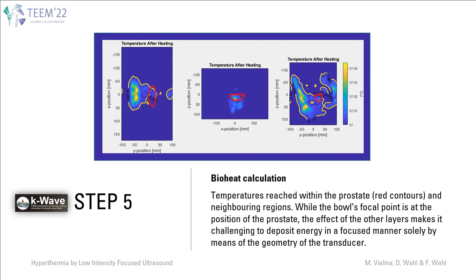Finally, step 5 leads to the bio-heat calculation. The temperatures reached within the prostate, again represented by the red contours, and the neighboring regions, can be seen in the picture. While the bowl's focal point is at the position of the prostate, the effect of other layers makes it challenging to deposit energy in a focused manner solely by means of the geometry of the transducer. This illustrates the importance of having realistic setups like the ones presented in this work, as it allows physicians to customize target zones based on an actual representation of the procedure.